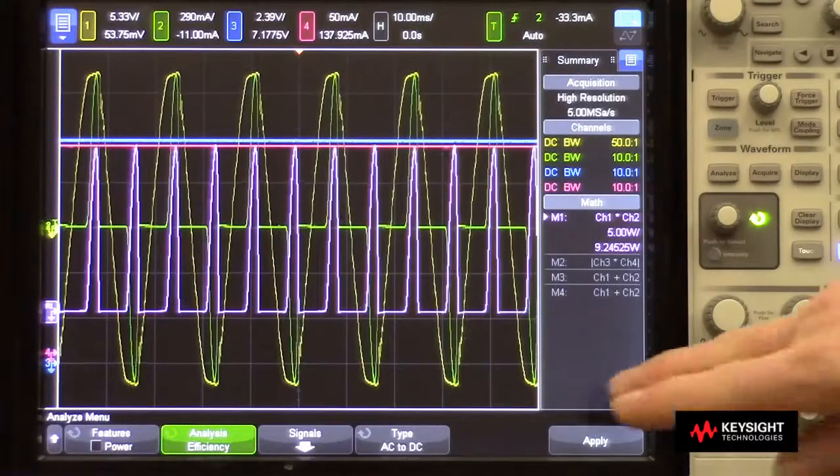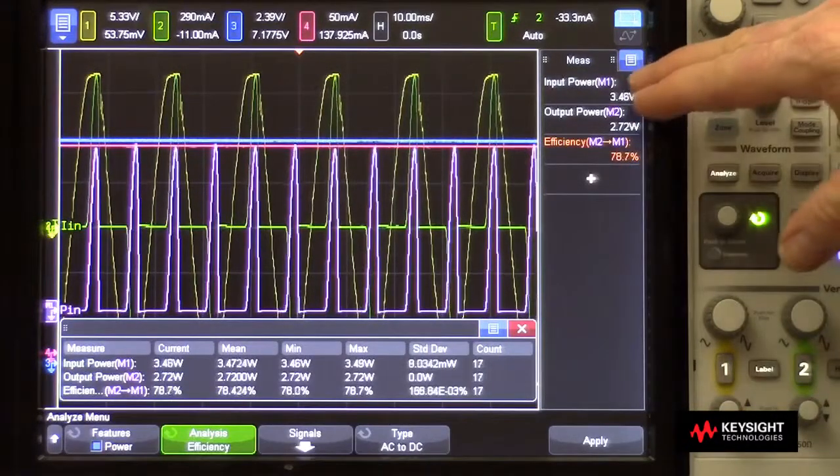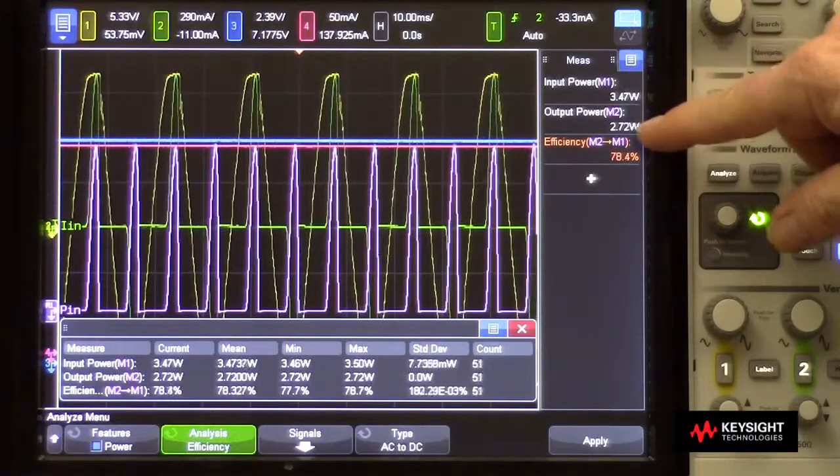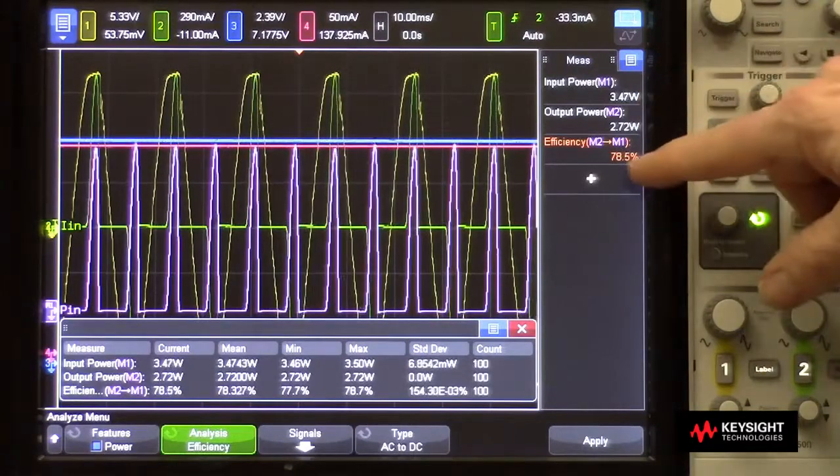To perform the efficiency measurement, I simply press apply, and the scope automatically turns on and measures input power, in this case about three and a half watts, output power, about 2.7 watts, and the efficiency, which is just the ratio of these two, of about 78%.